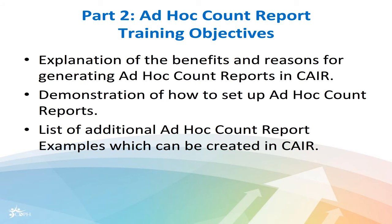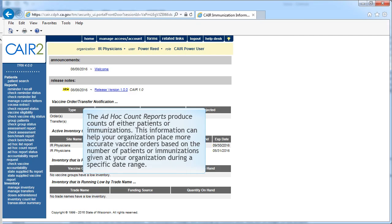Part 2: Ad Hoc Count Report Training Objectives — an explanation of the benefits and reasons for generating Ad Hoc Count Reports in CARE, a demonstration of how to set up Ad Hoc Count Reports, and a list of additional Ad Hoc Count Report examples which can be created in CARE. The Ad Hoc Count Report produces counts of either patients or immunizations. This information can help your organization place more accurate vaccine orders based on the number of patients or immunizations given at your organization during a specific date range.